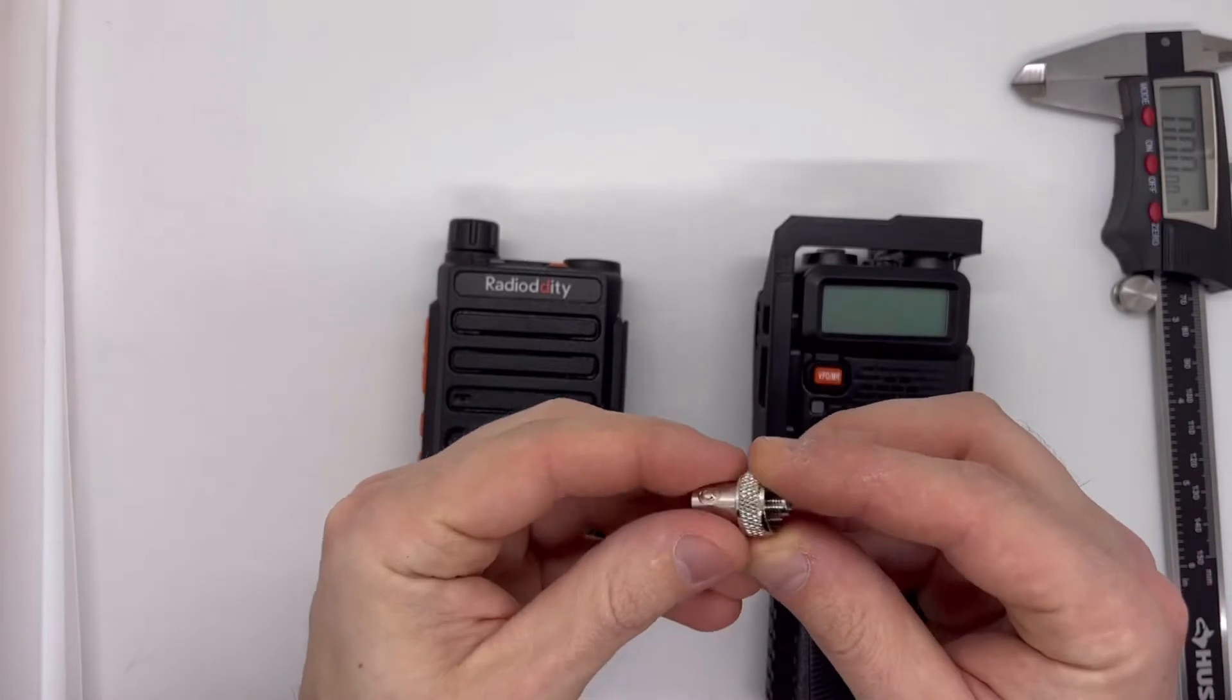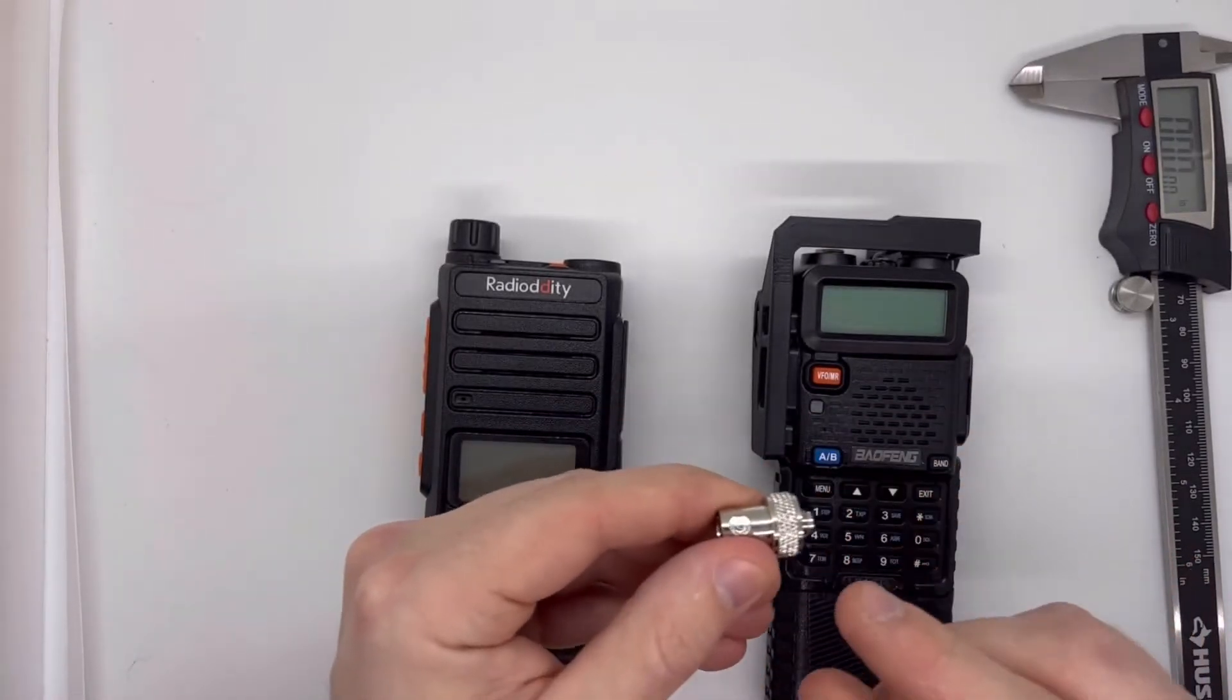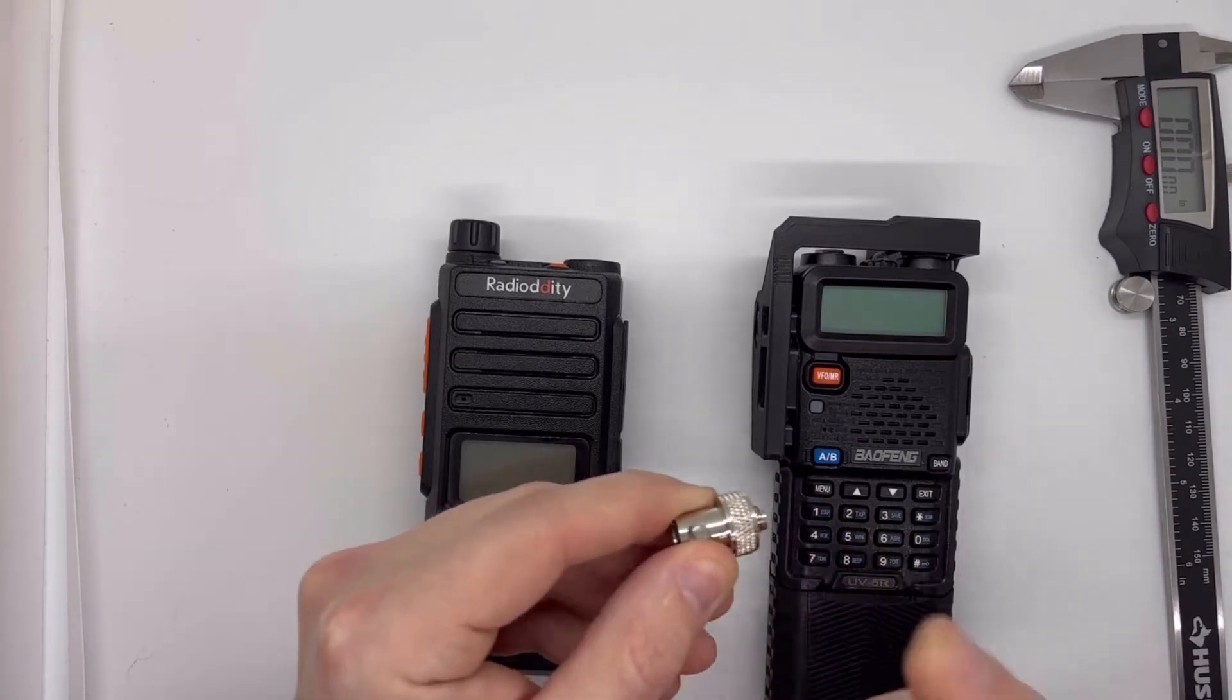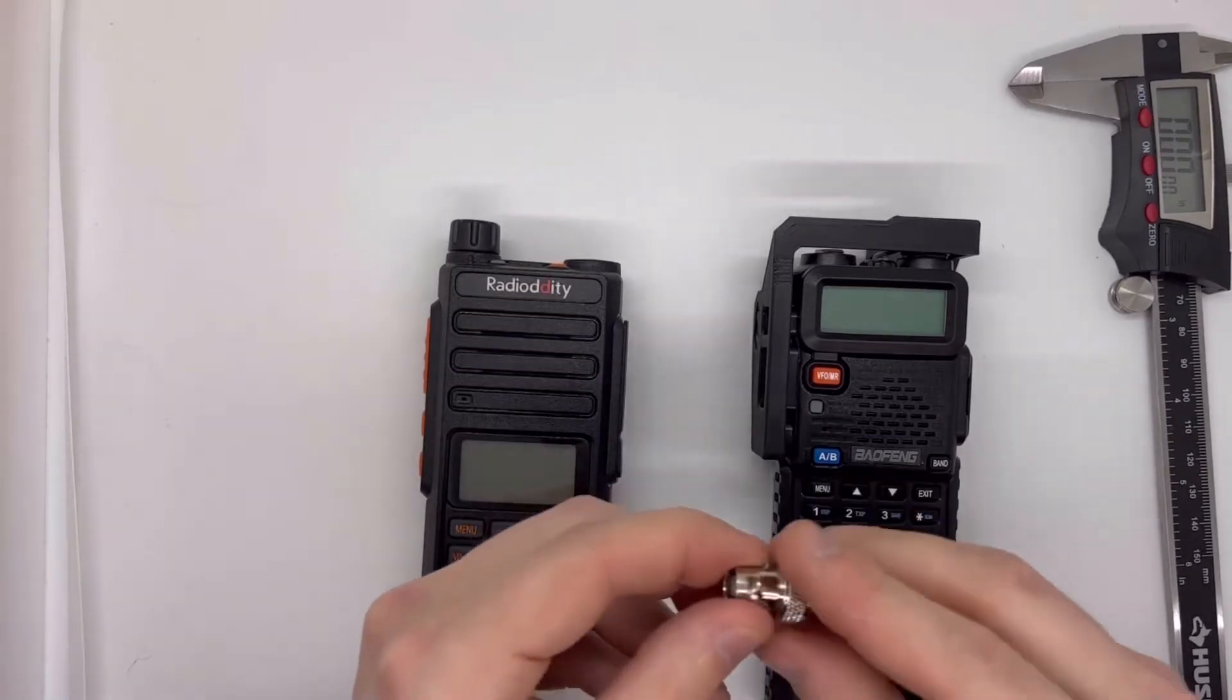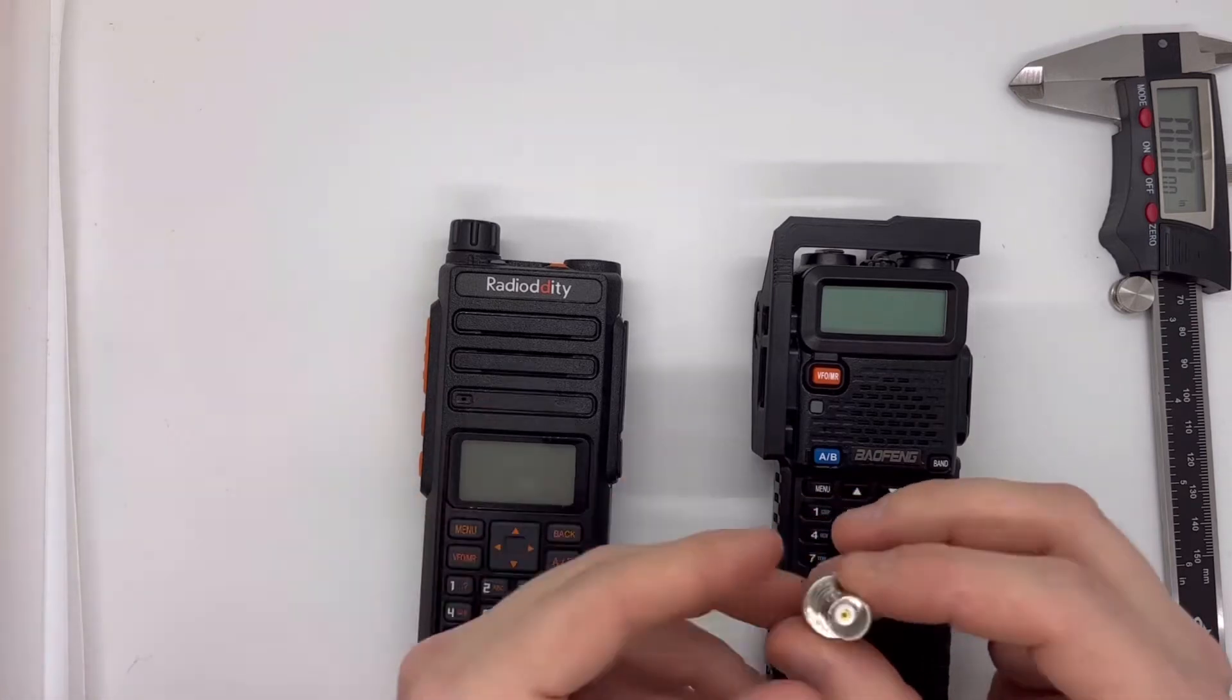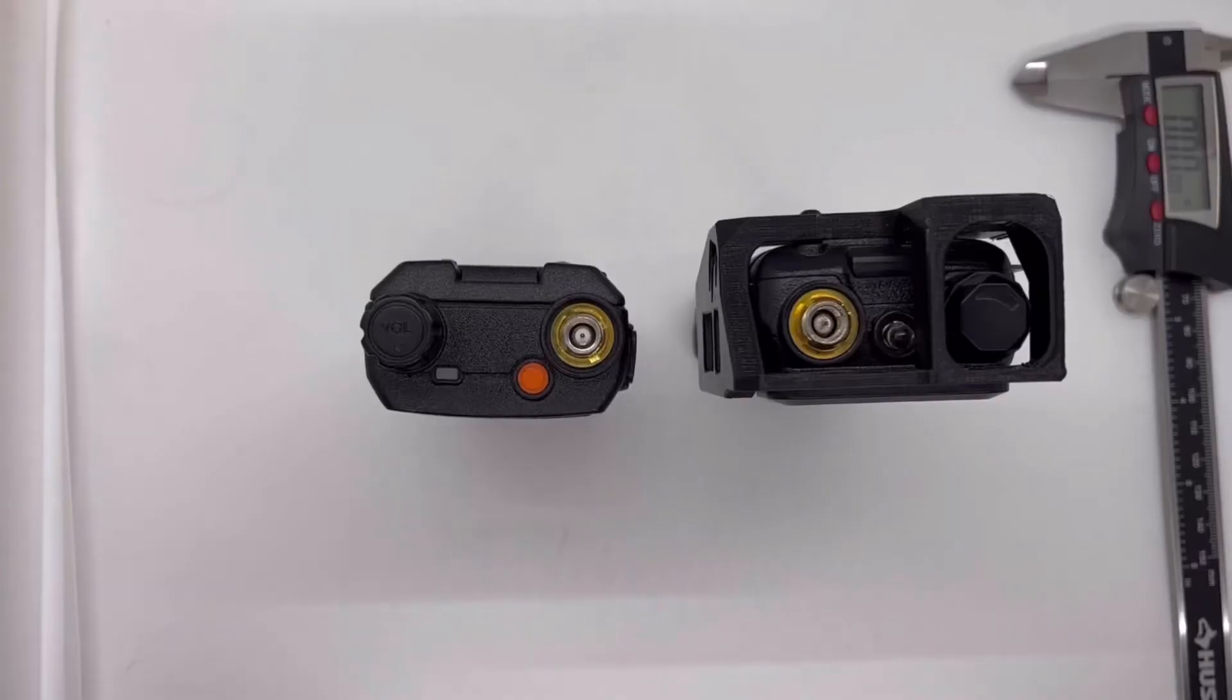The first adapter we're going to be looking at is the Baofeng adapter. This is SMA female to BNC female. This is going to work with all the antennas and relocation cables except anything that's TNC. So the Squad Leader and all the TNC relocation cables will not fit on this. It has to be a BNC male antenna or BNC male relocation cable.